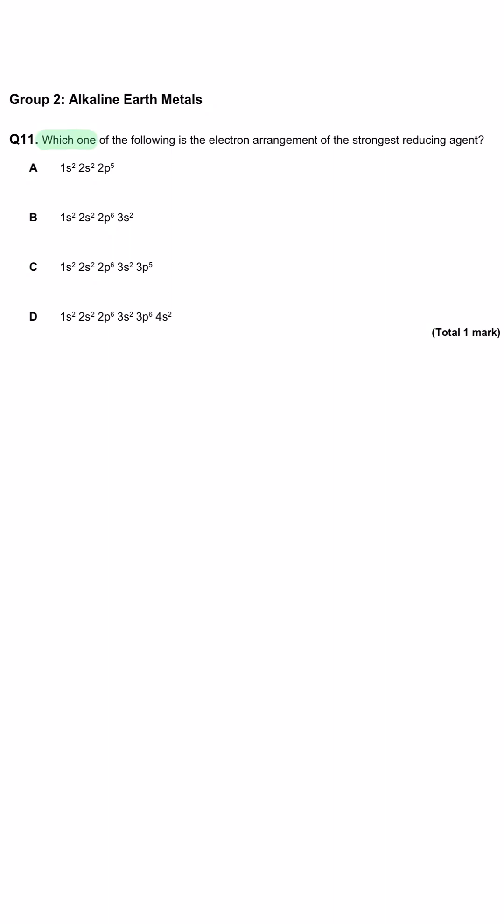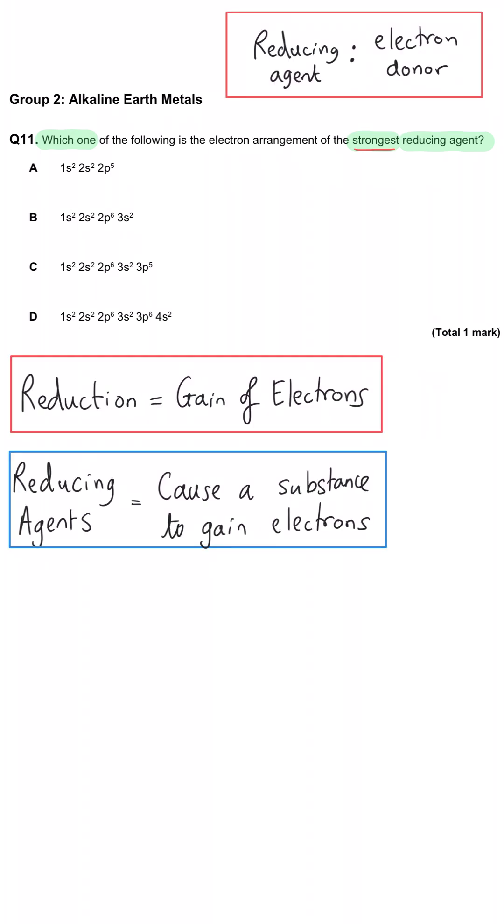Which one of the following is the electron arrangement of the strongest reducing agent? Now, reducing agents cause something else to be reduced by giving away their electrons to that substance, which then gains them.